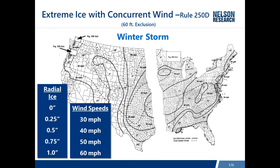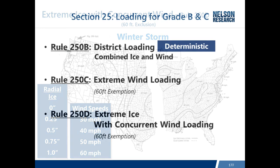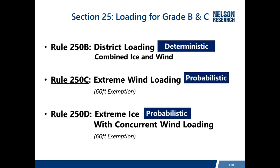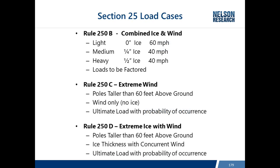Looking at all three load cases: Rule 250B is deterministic and loads must be factored, whereas Rules 250C and 250D use weather-data-based maps with a known probability of occurrence and use ultimate loads that are not factored. Rules 250C and 250D are only required to be applied to poles more than 60 feet above ground.